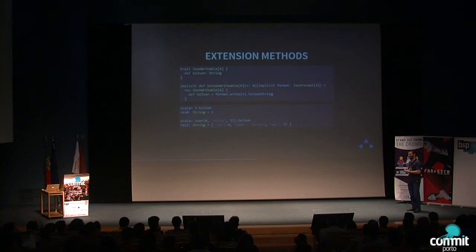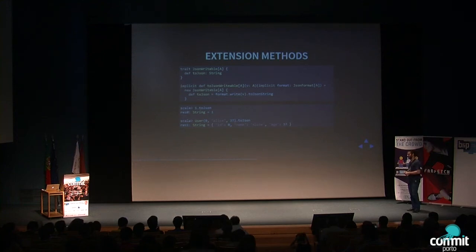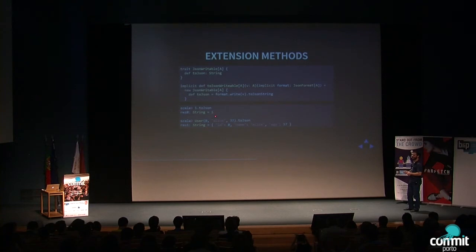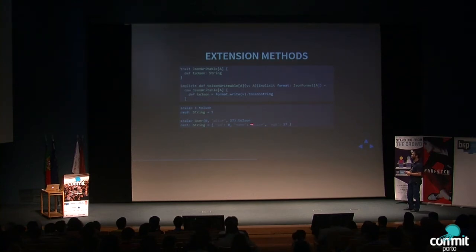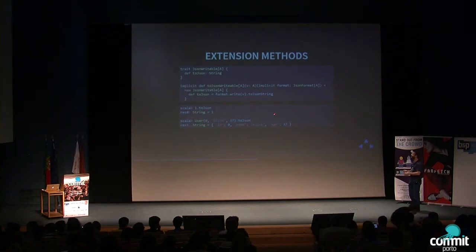Implicit trickery also allows you to use extension methods, which is very common in Scala — both in our codebase and in Scala libraries. The Integer type doesn't have a `toJSON` method, but I'm able to call it by declaring an implicit conversion from a type that has an implicit JSONFormat to a JSONWritable, which has a `toJSON` method. Having this declared, I can call `toJSON` on any type that has an implicit format in scope. I've left implementing the JSONFormat for the User case class as an exercise.